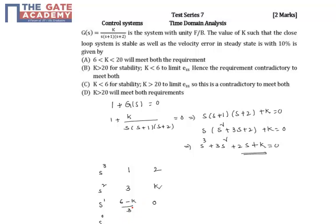This value is (6 minus K) by 3, and this is 0, and this value is K. So in order to make the closed loop system stable, there should be no sign change, which means K is less than 6 for stability.